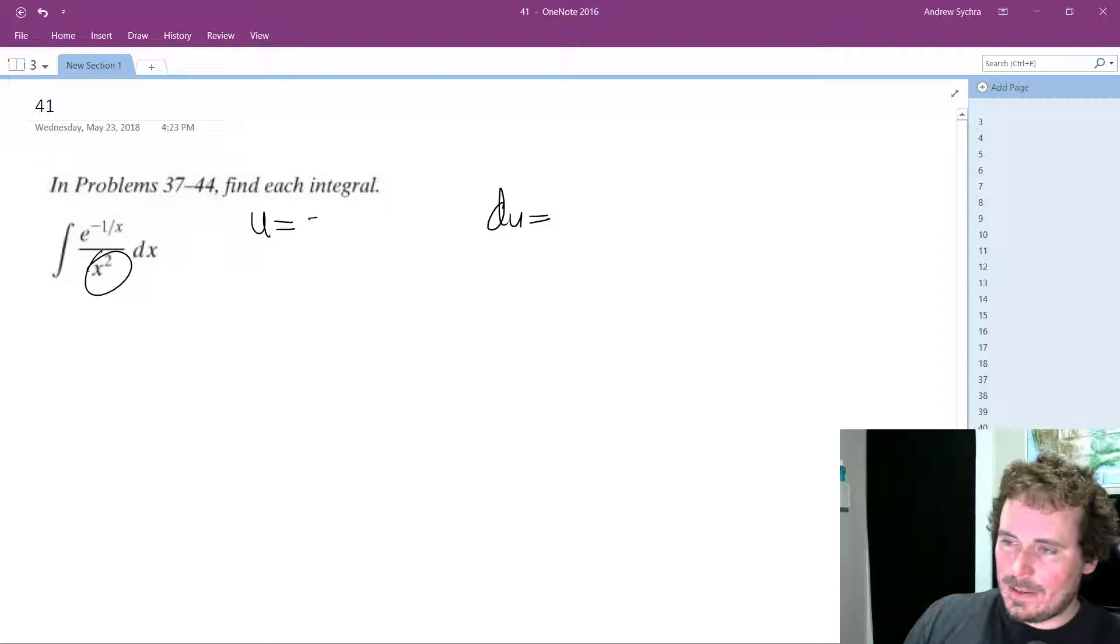So for u, I'm going to set that equal to negative 1 over x, which is the exponent value of negative 1 over x squared.